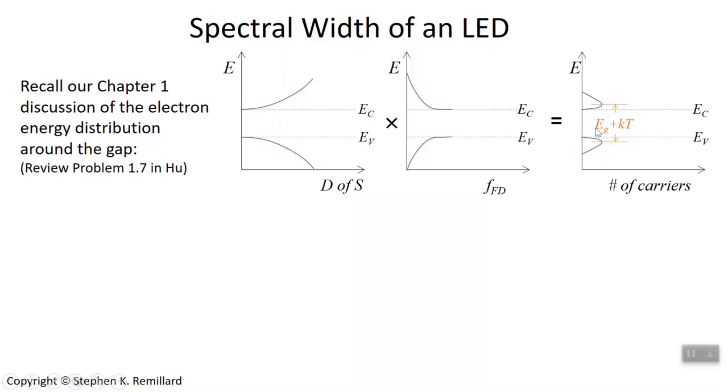The photon emitted has an energy that's not equal to the bandgap, but it's actually a little bit larger. We typically ignore that fact because the gap, E sub g, is typically one or two electron volts, and kT is 0.026 electron volts, but it's there. Especially when it comes to lasers, you can't ignore it.